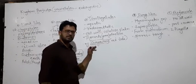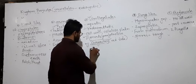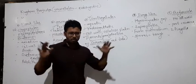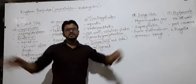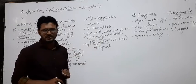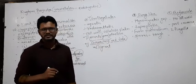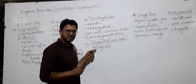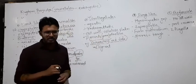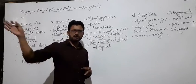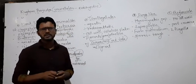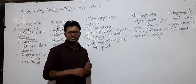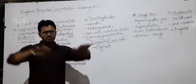Gonyaulax - yeh found in sea mein milta hai, aur they are having red pigment. Is red pigment ki vajah se, agar yeh bahut zyada maatra mein accumulate ho jaate hain, to poora samundar ka paani red dikhta hai aur jo lehren aati hain woh bhi red ho jaati hain - that is known as red tide. Red tide is caused due to dinoflagellates, its name is Gonyaulax. Interesting example: jaise Lonar Lake pink ho gayi thi kyunki waha specific algae develop hue the jo pink pigment tayar kar rahe the.